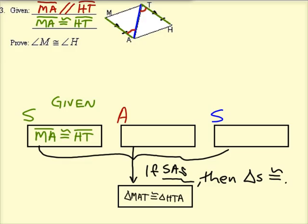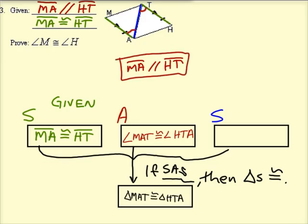Next, we want to talk about the two red angles that we had. We had angle MAT and angle HTA. But why is that true? Well, that's true because of this given information, the two parallel lines. So we have to mention that fact. So the fact that MA is parallel to HT, if we have parallel lines, then alternate interior angles are congruent.